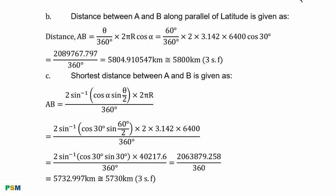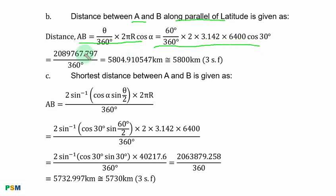Part B: the distance between A and B along the parallel of latitude is a distance along a small circle. Substituting all parameters into the small-circle distance formula and simplifying, then after division, gives the result. To 3 significant figures, the distance along the parallel of latitude is 5,800 kilometres.